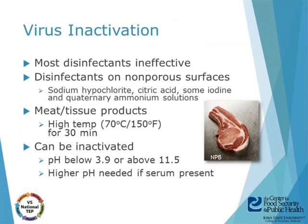Regarding virus inactivation, many common disinfectants are ineffective against the virus. Serum and feces have been found to greatly inhibit the efficacy of disinfectants, so it is very important to clean items prior to applying disinfectant. Many disinfectants have been reported to destroy the virus on non-porous surfaces. Unprocessed meat needs to be heated to at least 70°C or 150°F for 30 minutes to inactivate the virus. It can be inactivated by pH change — below 3.9 or above 11.5 — though a higher pH up to 13.4 is needed in the presence of serum.